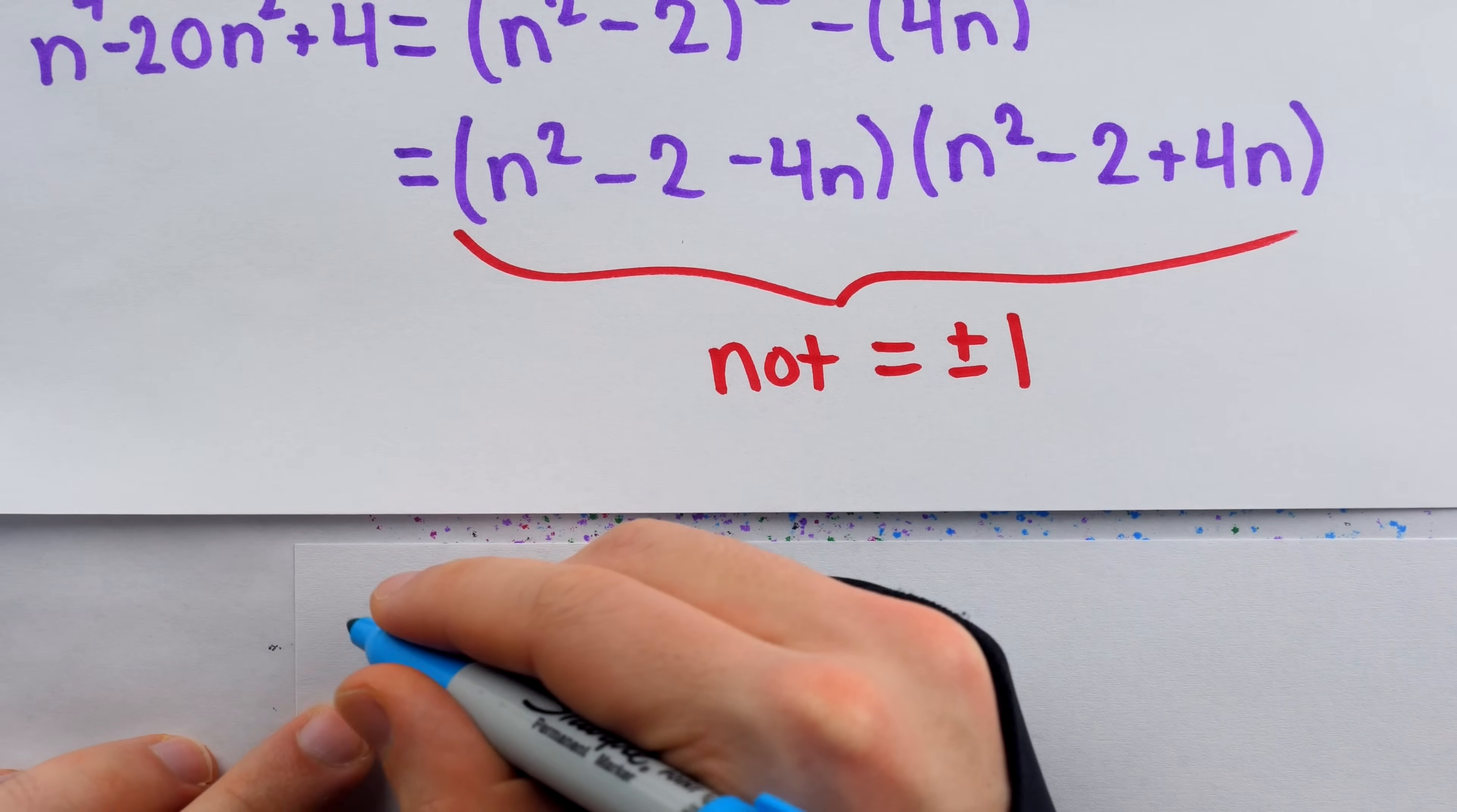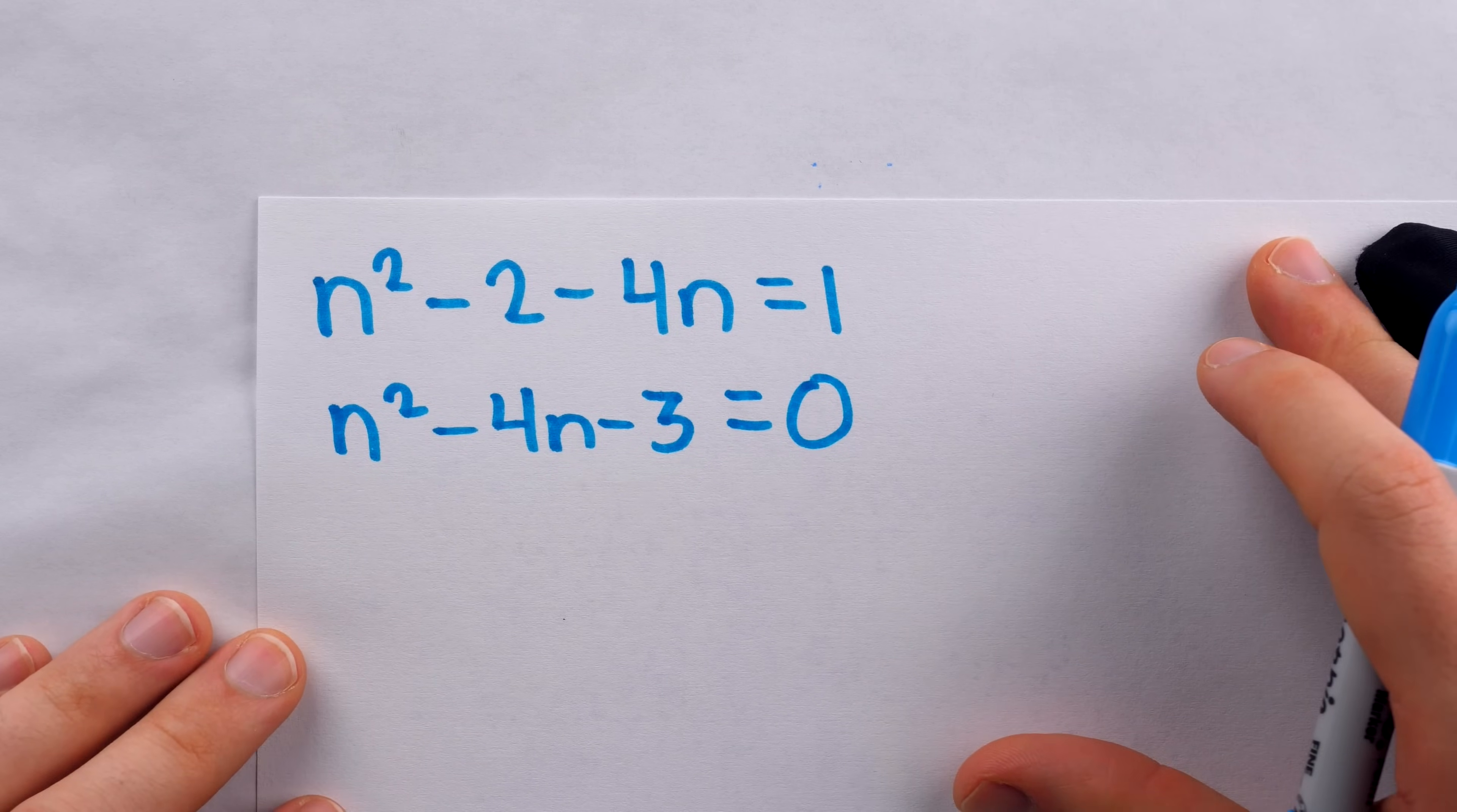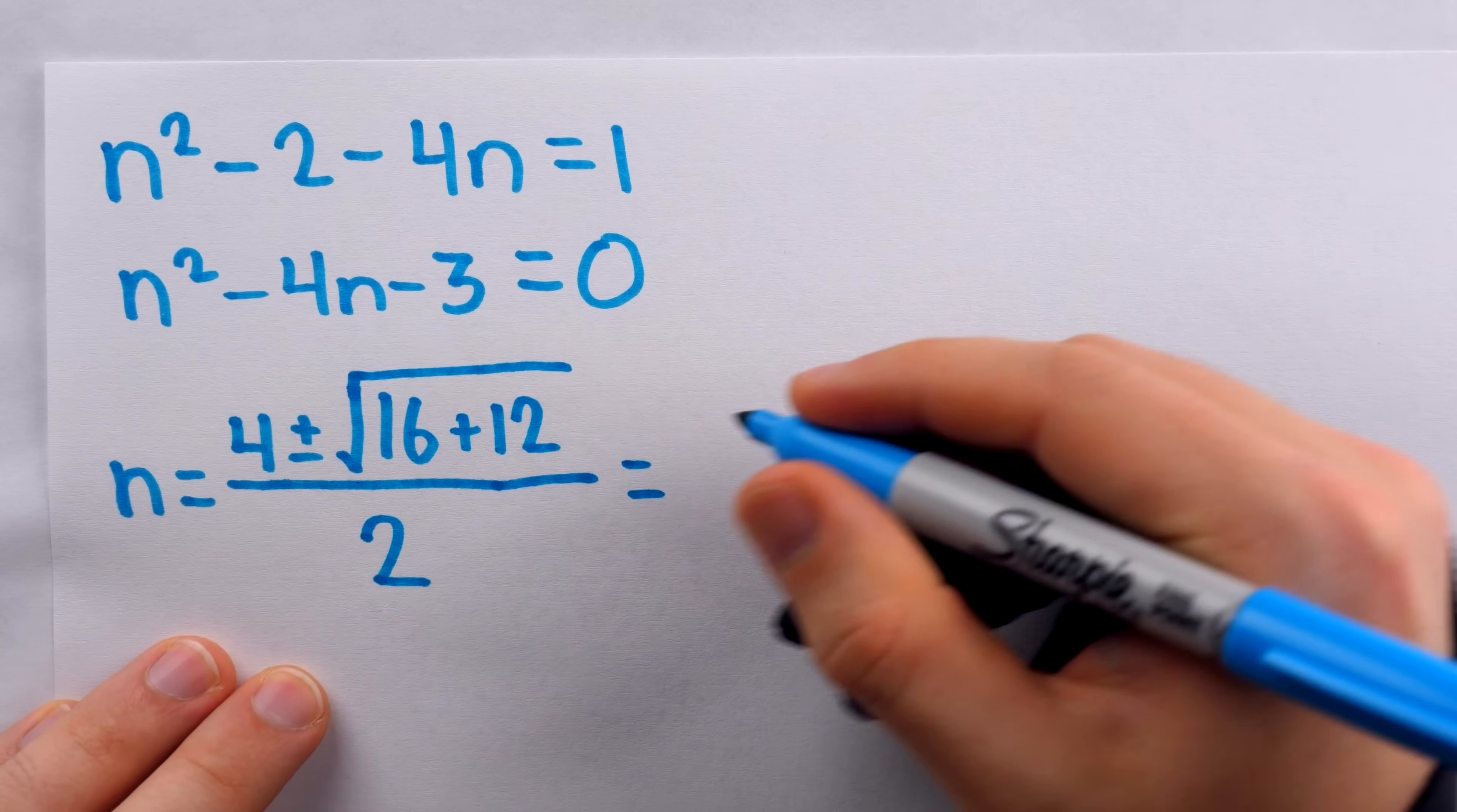Suppose, on the contrary, that it is equal to positive 1, and we'll show that this simply cannot be the case. If n squared minus 2 minus 4n was equal to positive 1, well, what's the issue here? Well, we could rewrite it as n squared minus 4n minus 3 equals 0, and then apply the quadratic formula to solve for n. That would tell us that n is equal to negative b, so positive 4, plus or minus the square root of b squared, which is 16, minus 4ac. 4 times a times c is negative 12, so if we subtract that, we get positive 12. And then, of course, all of this is over 2a, which is just 2. Then 4 over 2 is 2, so this is 2 plus or minus the square root of 28 over 2.